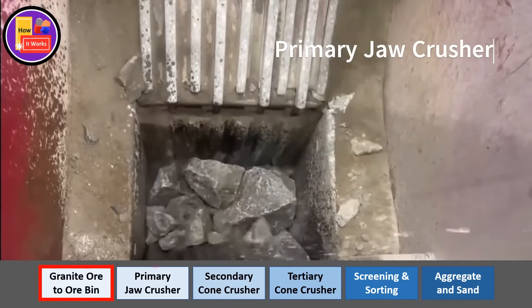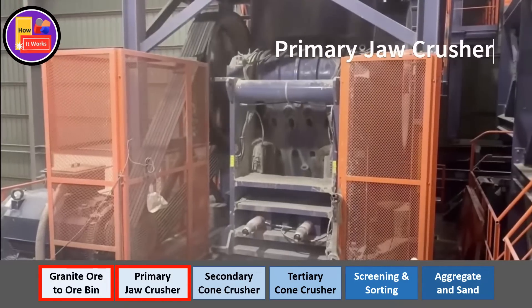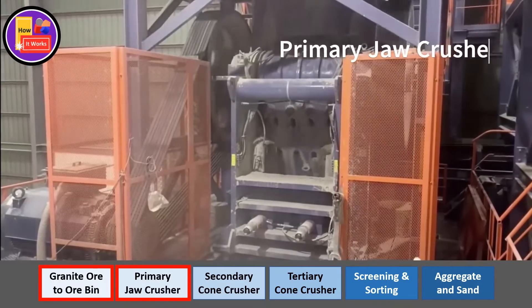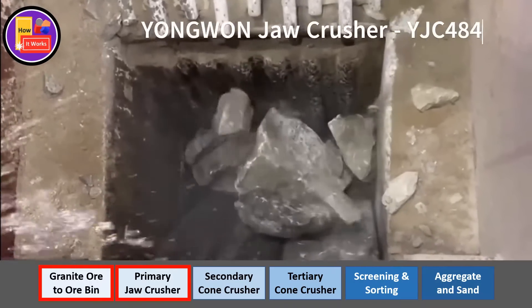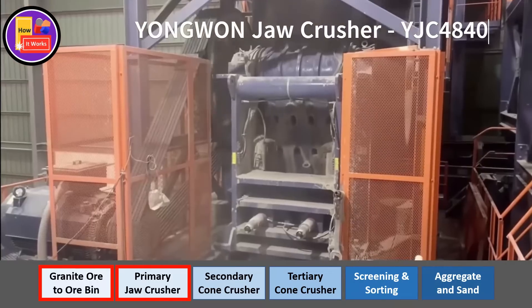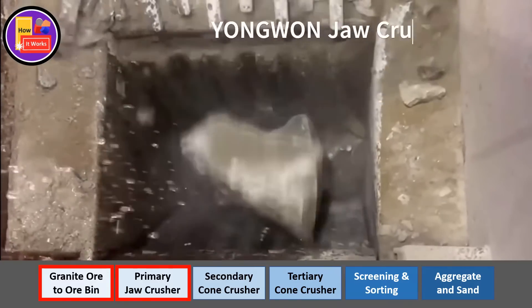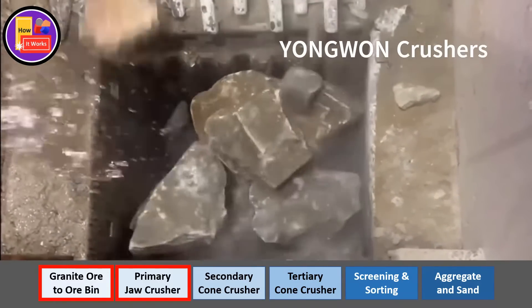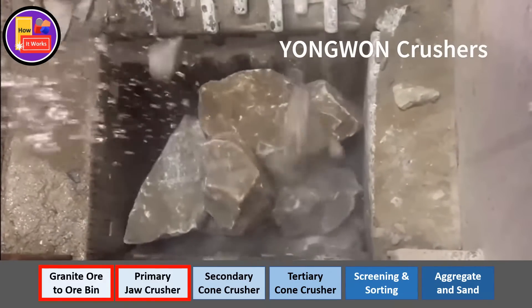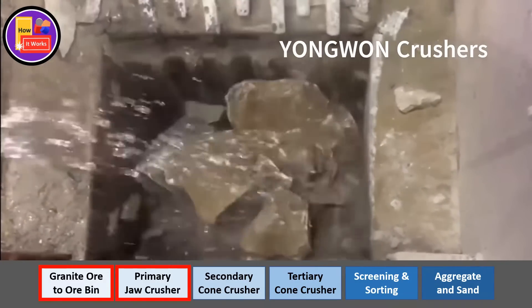A jaw crusher is used as the primary crusher to reduce the large boulders to medium-sized stones for further processing downstream. Yangwon is a leading crushing equipment manufacturer in Korea.